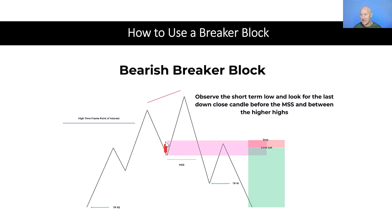Our breaker block is our last down close candle in the swing low between our two higher highs prior to that market structure shift. So we've drawn out our area of interest — our pink box drawn out in time — and we're waiting for price to trade back up into that zone, which is where we know traders are going to be mitigating their losses who were wrong-footed trying to go long on a trend continuation.